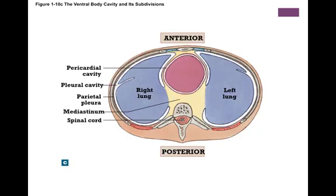Here's a picture. You can see the right and the left lungs — the parietal pleura lines the cavity, and the visceral pleura is tightly adhered to the lung. For the pericardium, you can see the parietal pericardium that lines the pericardial cavity, and the visceral pericardium that is tightly adhered to the heart.